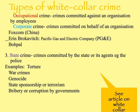One that we haven't touched on much is state crime, and Marxists in particular are interested in this. These are crimes committed by the state or its agents — for example, the police, the army, the Secret Service. Examples can include torture, war crimes, genocide, state sponsorship of terrorism, and bribery or corruption by governments themselves. You may think this is something that only developing countries do, but there are plenty of examples where our government and especially the American government have been involved in a range of these sorts of crimes.